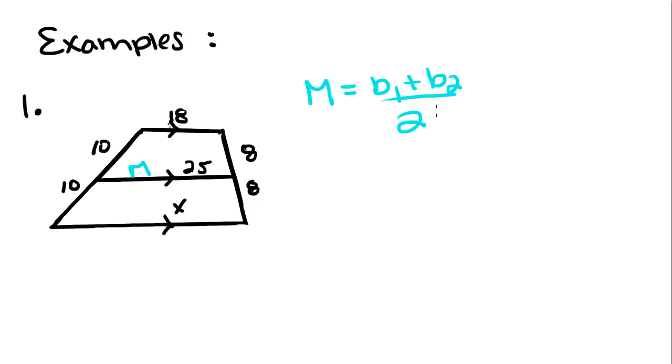So to find the length of X, we're going to plug all of this information into our formula. So M is the median of this trapezoid because it connects the two medians of the sides.